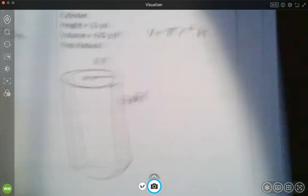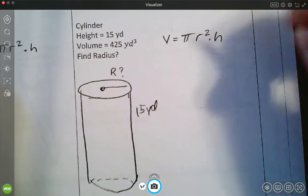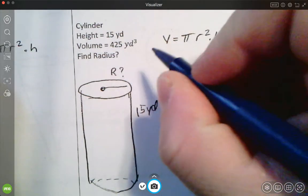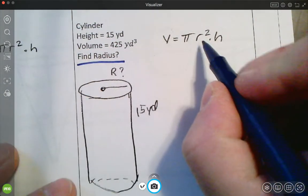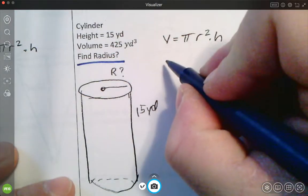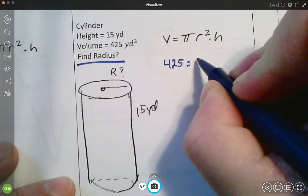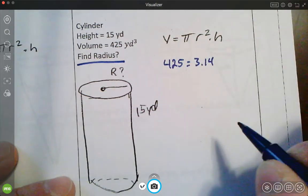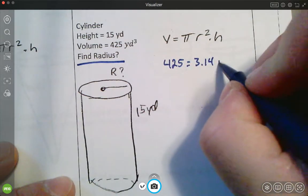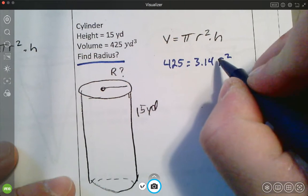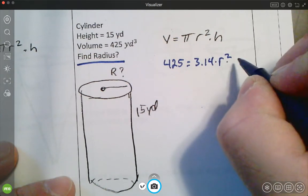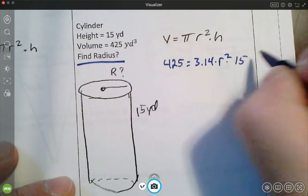Number two. Hopefully the numbers of this one look a little bit better. So here we're finding radius. So remember when you find radius, you're going to have to square root at the end. So I'm going to put in the numbers I know, 425 for my volume, 3.14 for my pi, radius squared, I don't know, and then my height here is 15. Alright.